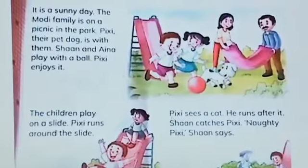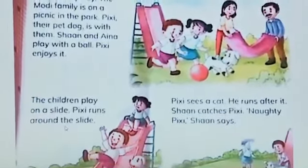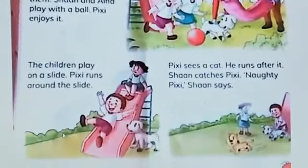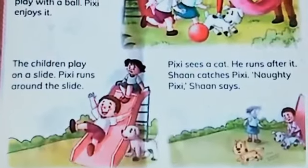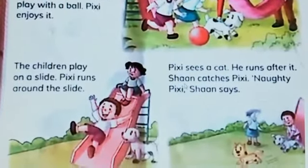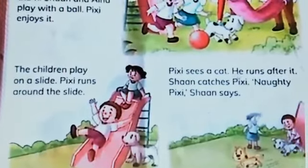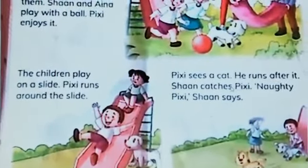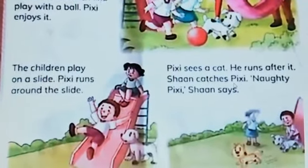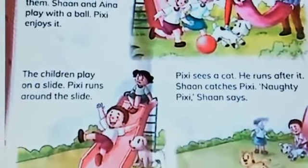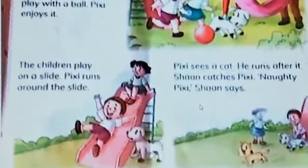Pixie bhi enjoy karta hai. The children play on a slide — bacche slide par khilte hain. Pixie runs around the slide — voh slide ke chaaron chakkar lagata hai. Pixie sees a cat — Pixie ek cat ko dekhta hai. He runs after it — voh us ke peeche daugta hai. Shan catches Pixie — Shan Pixie ko pakatta hai. Naughty Pixie, Shan says — you are so naughty.